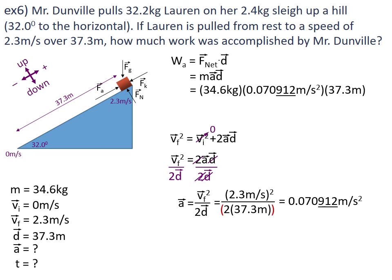Now I can go back up to that equation and substitute in the acceleration I found. The mass is 34.6, the acceleration is 0.070912 metres per second squared, and the displacement along the slope was 37.3 metres. Work done accelerating the object comes to 91.5 joules.